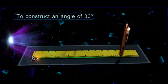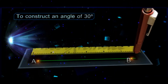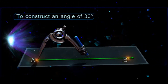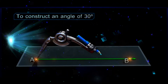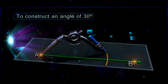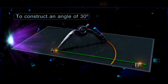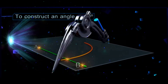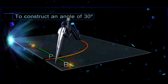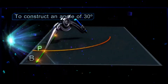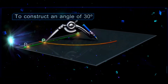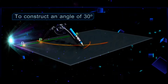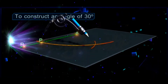Draw a ray AB. With A as center and any convenient radius, draw an arc intersecting ray AB at P. With P as center and the radius equal to AP, draw an arc intersecting the arc drawn earlier at Q.